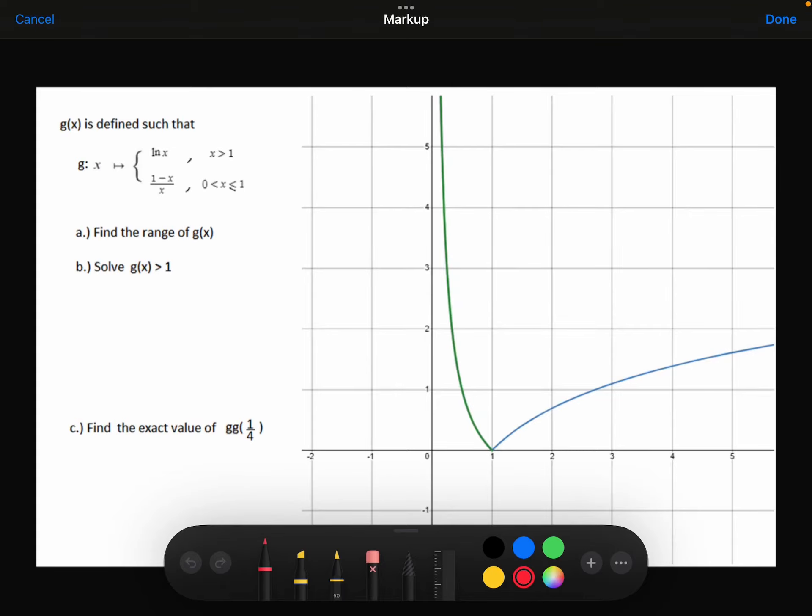G of x is defined such that G of x is equal to ln x when x is greater than 1, or 1 minus x over x, where x is between 0 and 1.